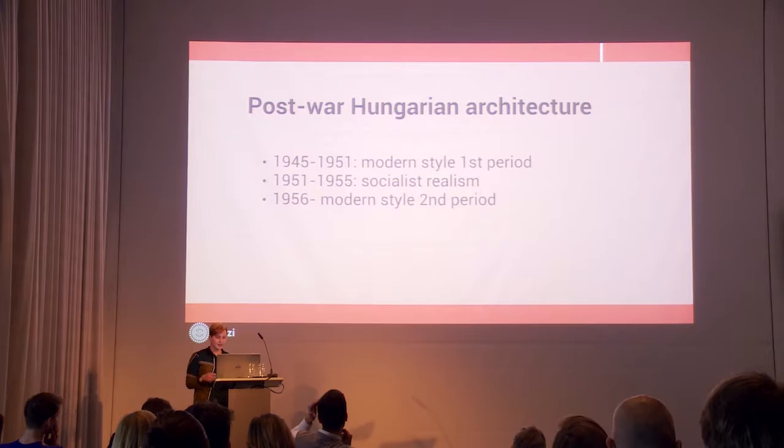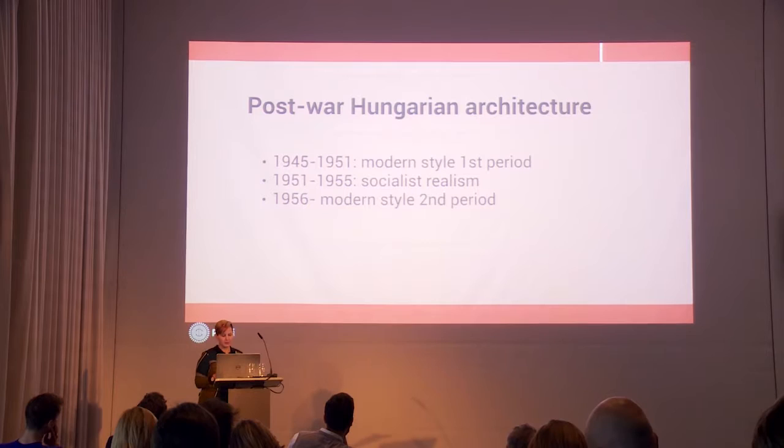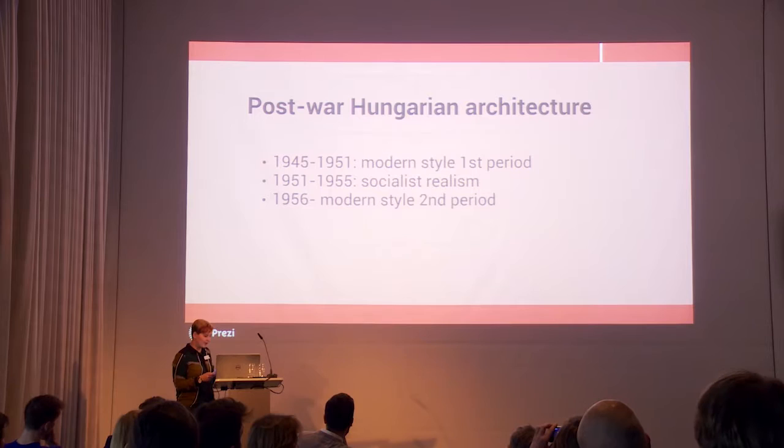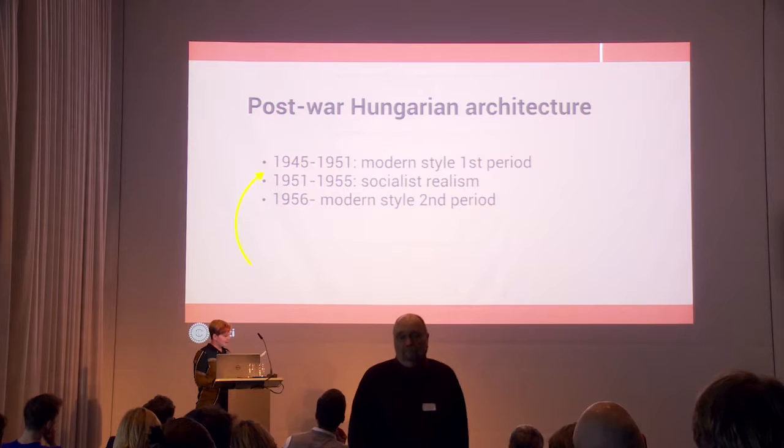Three architectural periods can be distinguished from that time, although the borders aren't so sharp between them. From 1945 to 1951 the first period of the post-war modern style, then Socialist Realism, and from 1956 the Second Period of the Modern Style.